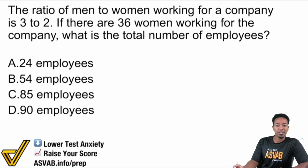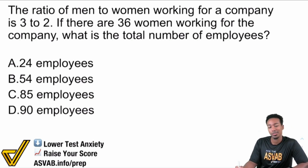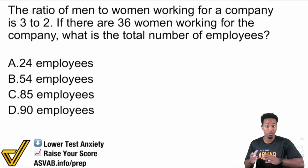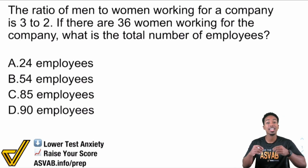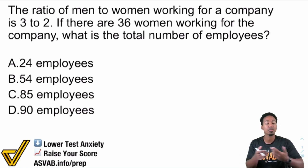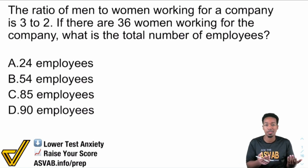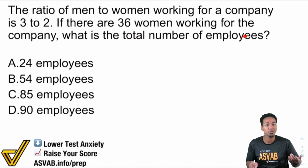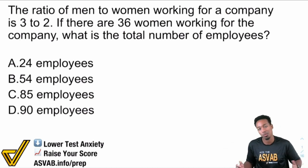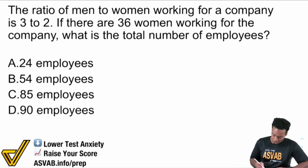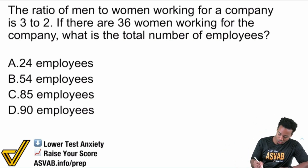First things first, when it comes to every single word problem, what do we got to do here? The first step is always to read the question. If you want to get better at word problems, start by looking at the goal — what is it that we want to achieve? Because if we don't do that, you're going to start reading through information that you don't know what it's useful for, then you're going to blank out. So first step is: read the question.